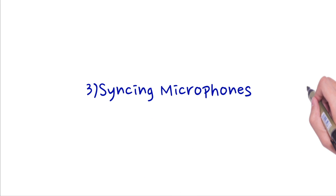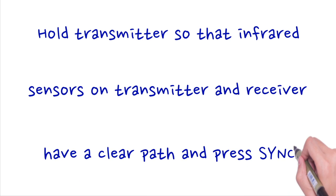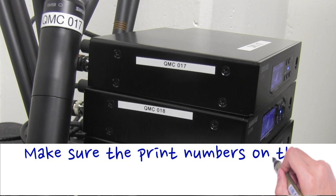Syncing microphones. Hold the transmitter, set the infrared sensors on the transmitter and receiver to have a clear path, and press sync. Make sure the print numbers on the transmitter and receiver match.